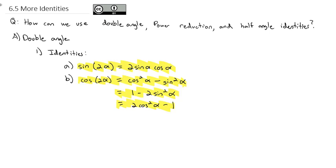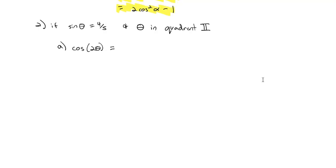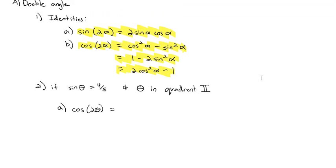We're going to look at how we can use those. If the sine of θ is equal to 4/5 and angle θ is in quadrant 2, what we're going to attempt to find is the cosine of 2θ. We've got three options for cosine of 2θ: cosine squared minus sine squared, 1 minus 2 sine squared, or 2 cosine squared minus 1. Since we only know the sine, we'll use 1 minus 2 sine squared of θ.